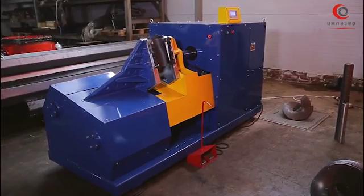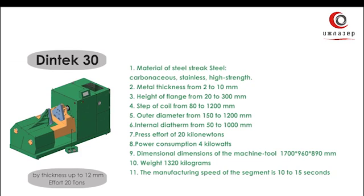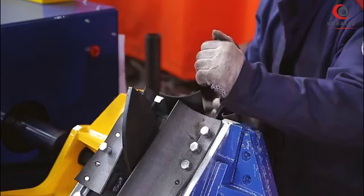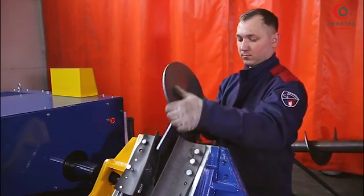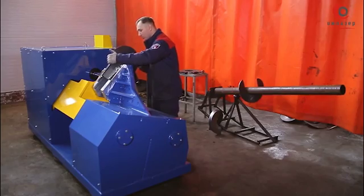Our company offers the following machine tool models. Dintec 30 allows to bend a coil of auger up to 20 mm thick with a press force of 30 tons. Dintec 70 allows to bend a coil of auger up to 30 mm thick with a press force of 50 tons. The machine tools for bending coils and segments of auger — Dintec from the company Islazer — is the choice for those who want to get a machine tool in the shortest possible time with high performance and quality parameters.